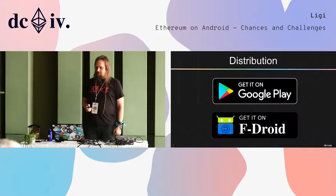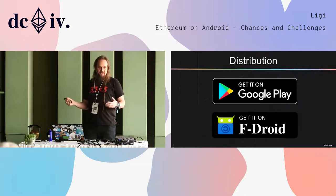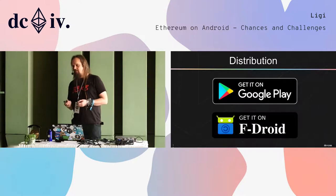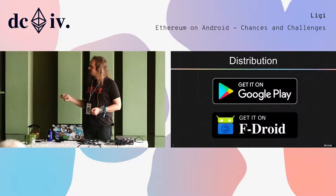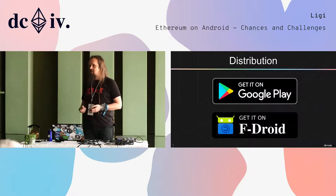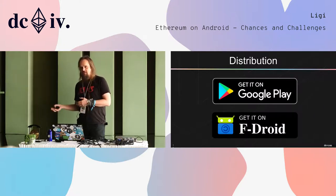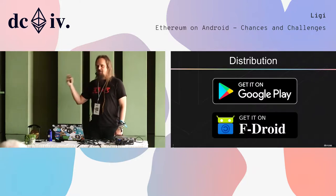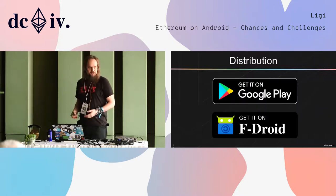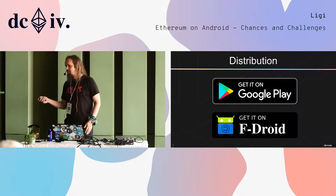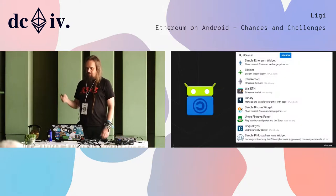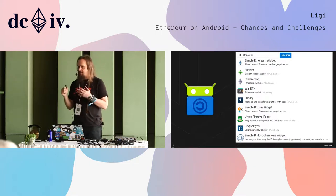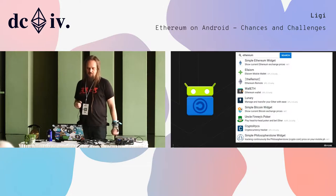Distribution comes with a lot of centralization — most people get their apps from Google Play. People say Android has the same centralization problems as iOS since you rely on Google, but Android is open-source and you can fork it; the store, however, is a big problem. Fortunately there are alternatives, like F-Droid, which is an open-source store where only open-source apps with all-libre downstream libraries can be hosted. We should go even further — I'm envisioning a fully decentralized store with reproducible builds. Unfortunately, searching Ethereum on F-Droid currently returns very few results, so we should really push to get more dApps and wallets on that store.